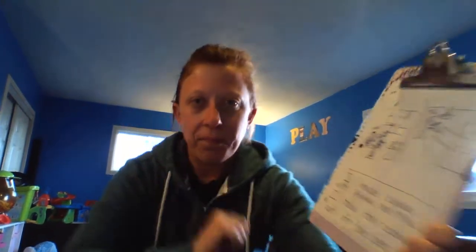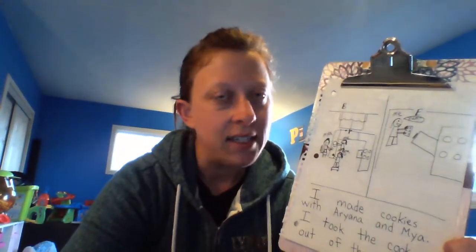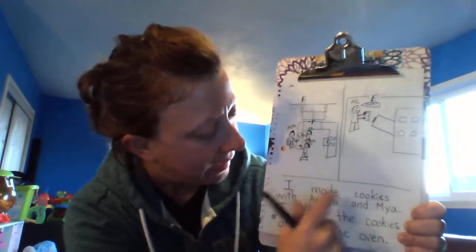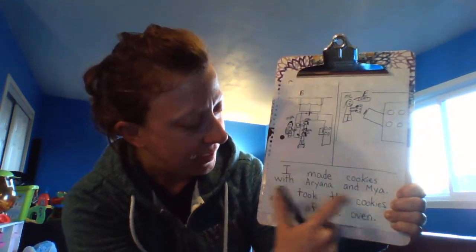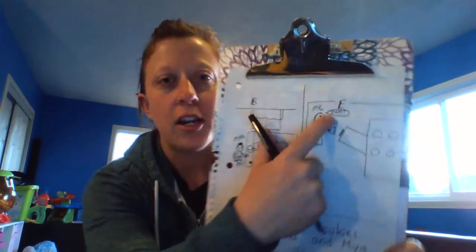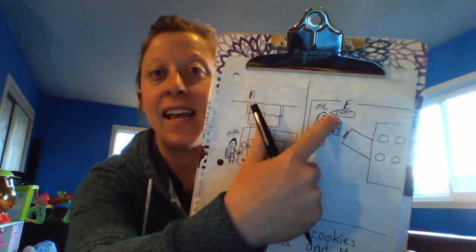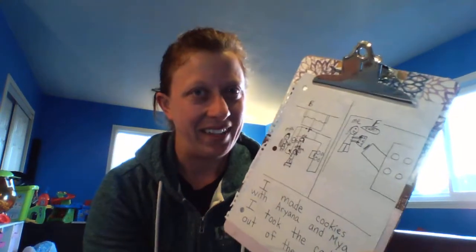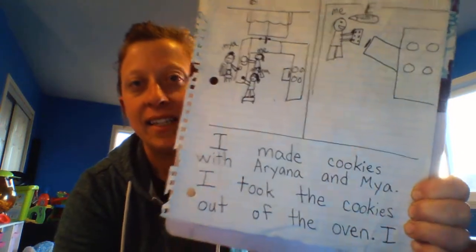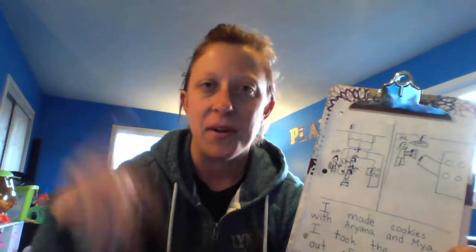Now we have to reread it. That's always the key. We have to reread it as much as we can to make sure it makes sense. Let's start at the top. I made cookies with Ariana and Maya. I took the cookies out of the oven. Should I add — I said yum. Yeah, I need to add that I said something. I is a new part of the sentence, so it needs to be uppercase. And I, when he's by himself, is always uppercase. We know that.